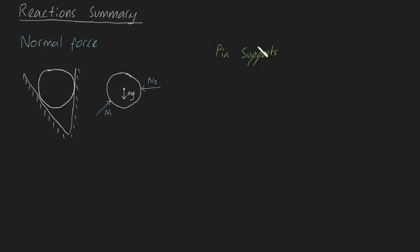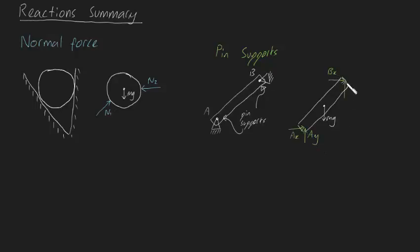Now let's talk about pin supports. Imagine you have a beam that's pinned on both ends, A and B. The free body diagram will show the force due to gravity, and one set of reaction forces AX and AY, and another set of reaction forces BX and BY. These reaction forces are in the X and Y direction because the pin prevents the bar from moving in both the X and Y directions at this point.